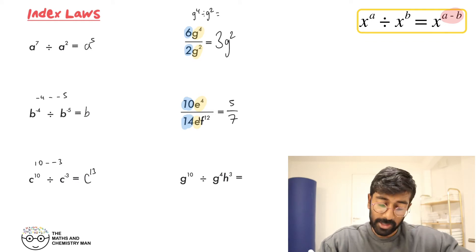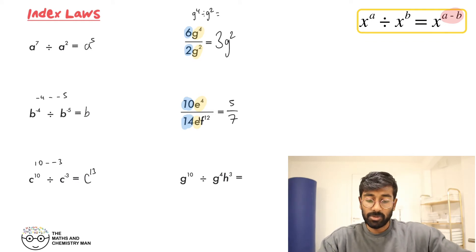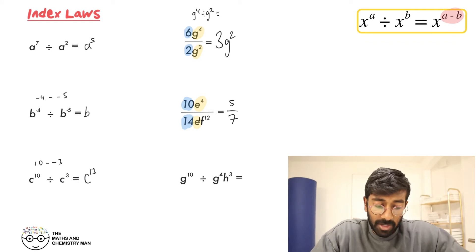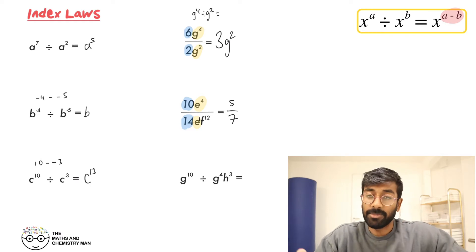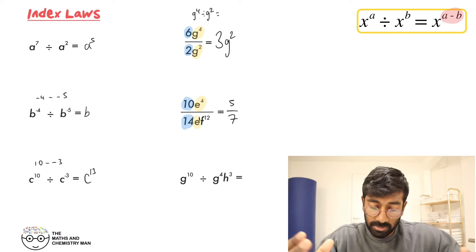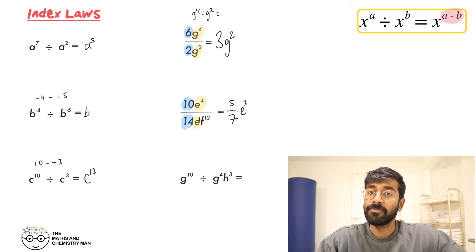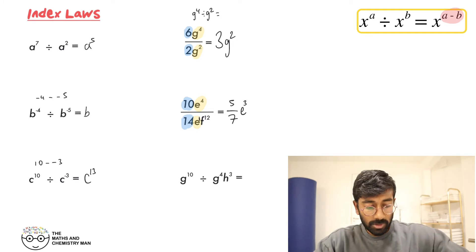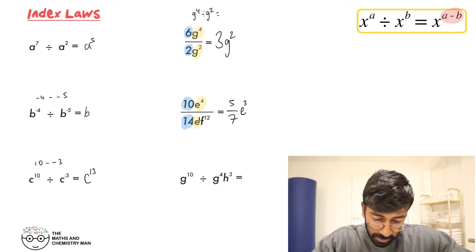All we do is subtract our powers: E to the 4 divided by E to the 1 — take away the powers — and you're left with E to the power of 3. Now you'll notice you've got F to the power of 12 on the bottom but no power of F apparently at the top, so we'll imagine there was F to the power of 0 on the top.